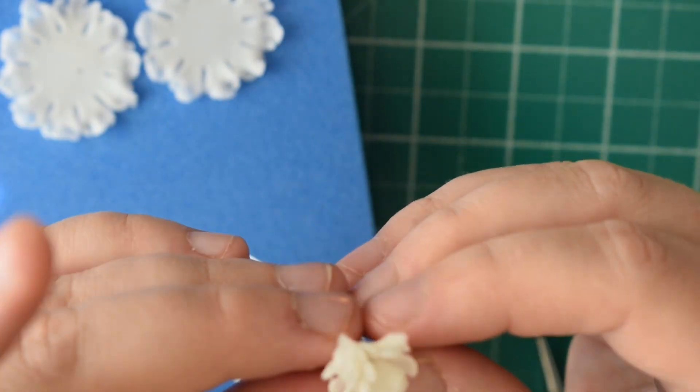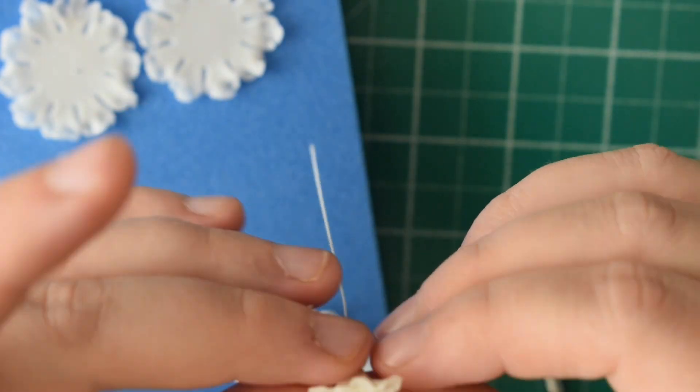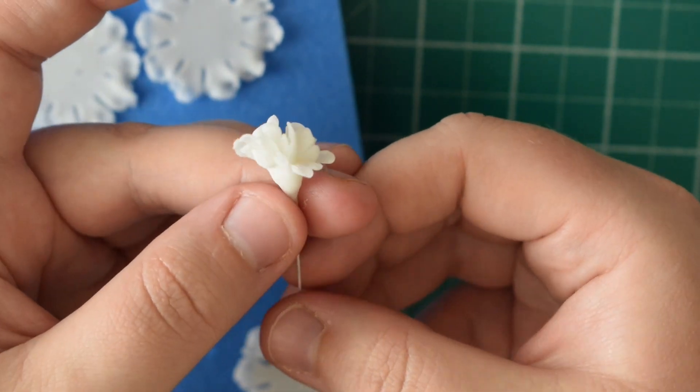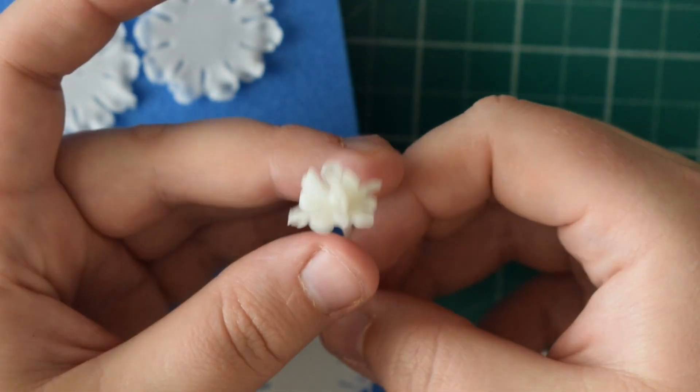So you're going to twist once the flower's on there and then pull off the excess and just push in the petals all in together. And that's what you should end up with once you've done it.